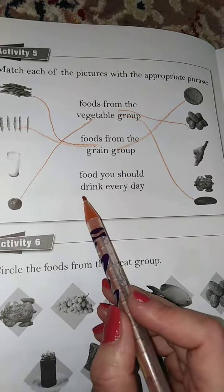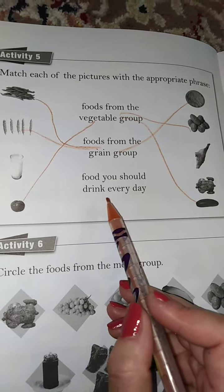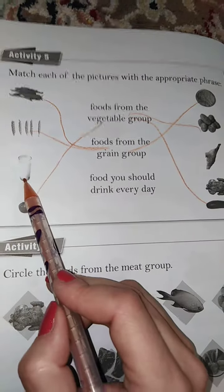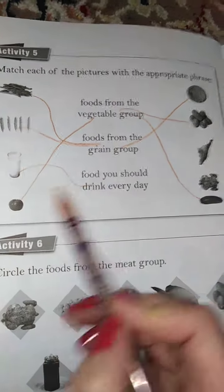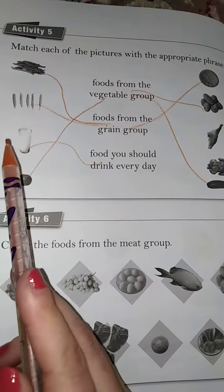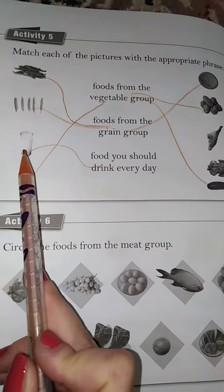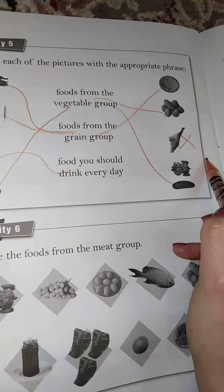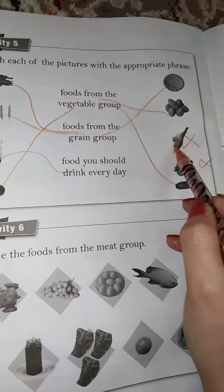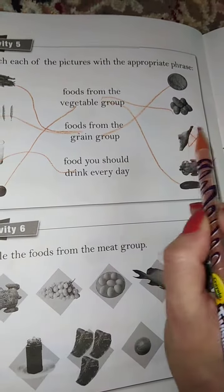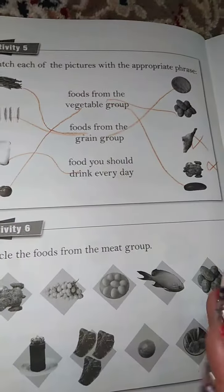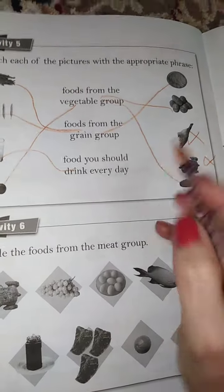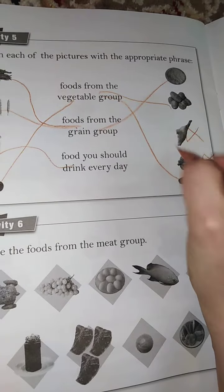Food you should drink every day — milk. You should drink it every day because it's good for your teeth and bones. Chicken and meat — we cannot use them here. So, tell me, where can you find meat and chicken? In the meat group.